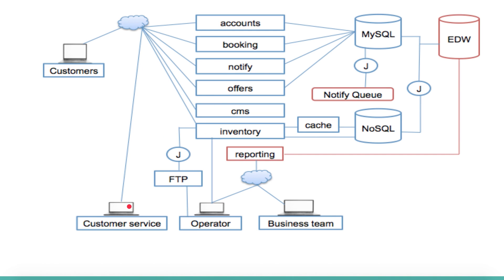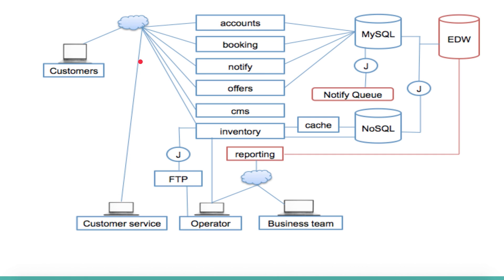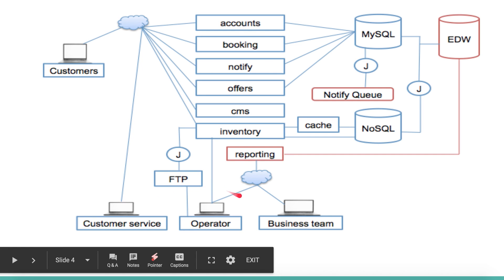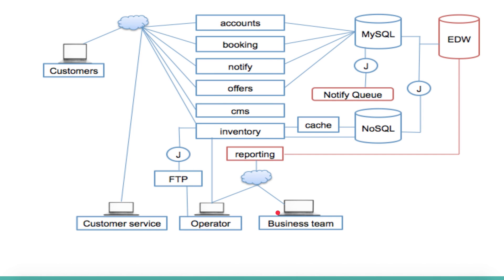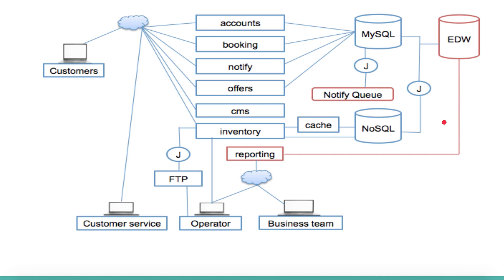Similarly, when more tickets are sold, you get a lot more customer service calls, so you need to increase both the number of staff and the software components interacting with web services from the customer service side. And when traffic increases and more tickets are booked, the data generated in MySQL and the EDW grows significantly. The reporting engine also has to be scaled to make sure data is correct and the business is getting the right information. These are the key areas where we must focus on scaling.